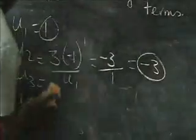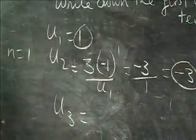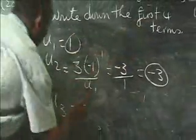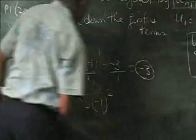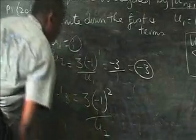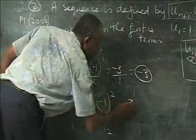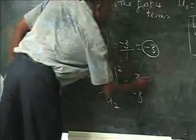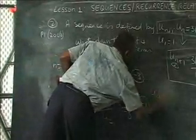For u3, n must be 2. Substituting n=2, we get u3 = 3(-1)^2 / u2. Now (-1)^2 = 1, so the numerator is 3 × 1 = 3. Since u2 = -3, we get u3 = 3 / (-3) = -1. So u3 = -1. I'll give you u4 as an assignment to try on your own.